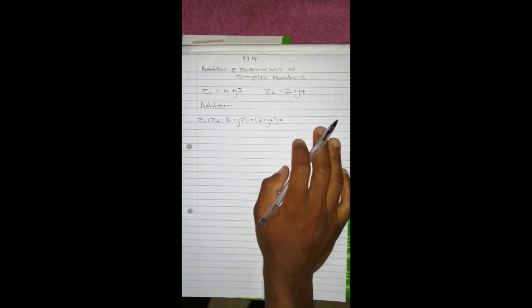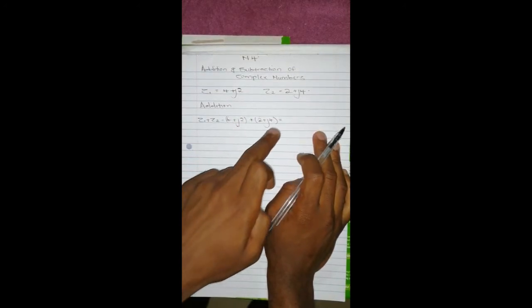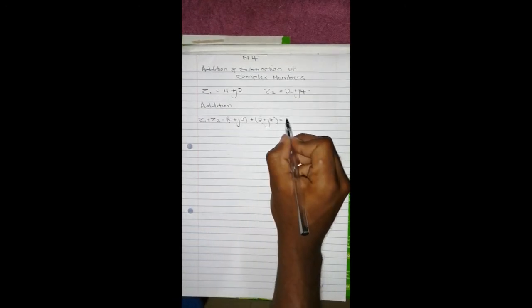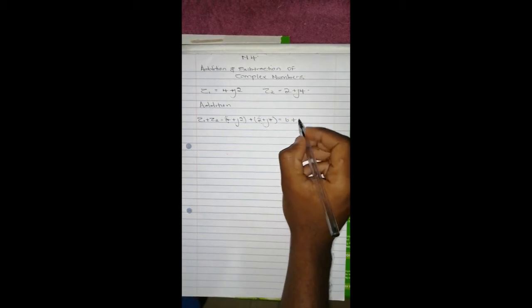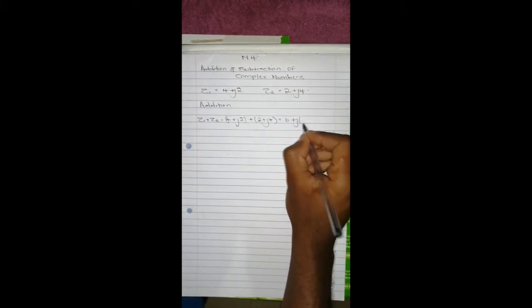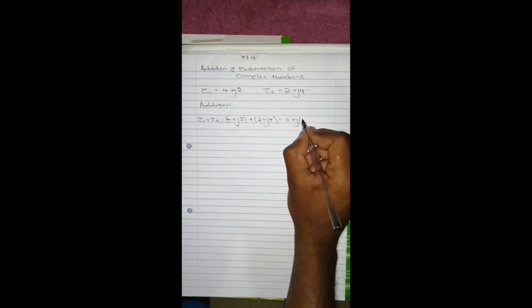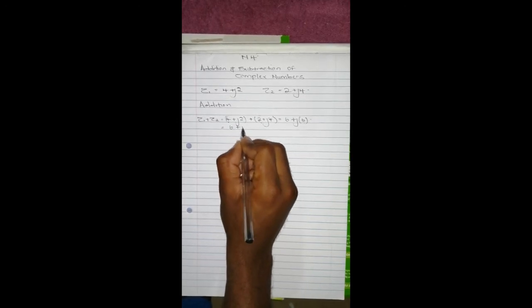What you do is group like terms. You take the real parts of both complex numbers and add them together, so it's going to be 4 plus 2, which is 6. Then you take the imaginary parts and add them together, and it's going to be 2j plus 4j, which is 6j. So as a result you have 6 plus 6j.